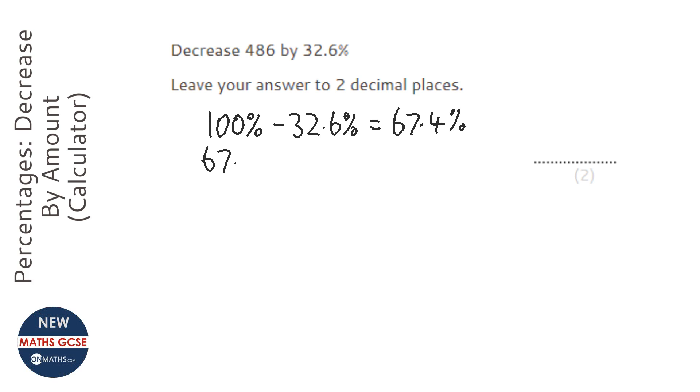Then we get that 67.4%, and we divide it by 100. So I'm going to divide by 100, and we get 0.674. And that's our multiplier.